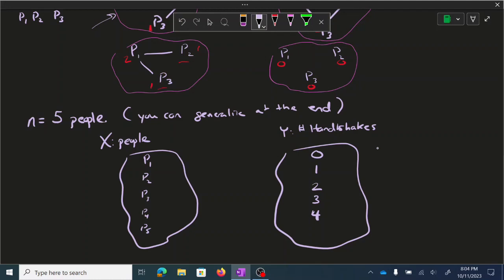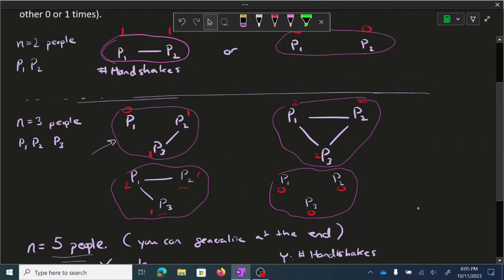But it turns out that if you have five people, the maximum number of handshakes that could occur for any single person is going to be four. In fact, it's always going to be one less.